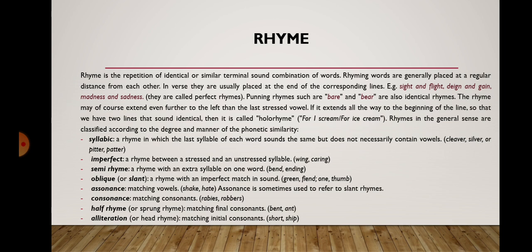Rhyme is the repetition of identical or similar terminal sound combinations of words. Rhyming words are generally placed at a regular distance from each other; in verse they are usually placed at the end of corresponding lines. For example: sight and flight, deign and gain, madness and sadness — these are called perfect rhymes. Punning rhymes such as bear and bear are also identical rhymes. If the rhyme extends all the way to the beginning of the line so that two lines sound identical, it is called a hollow rhyme — for example, 'for ice cream / for ice cream.'